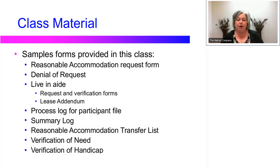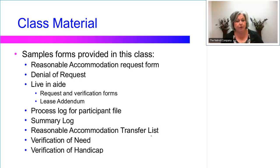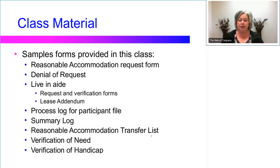We'll talk about the reasonable accommodation transfer list, which should be maintained both by property and PHA as a whole, the verification of need for the reasonable accommodation, and the verification of handicap. All of these forms are important and you certainly don't have to use the sample forms provided. But should you have a fair housing review, every one of the forms listed here and available for download will be requested by the fair housing reviewer.